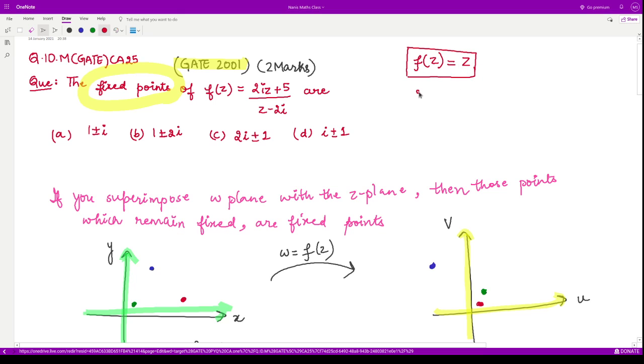So here our f(z) is (2iz + 5)/(z - 2i). This is equivalent to z. Now we can evaluate this very easily - it would be 2iz + 5, and we can shift this to the right hand side, so it would be z² - 2iz. So we have the quadratic equation in z: z² - 4iz - 5 = 0.